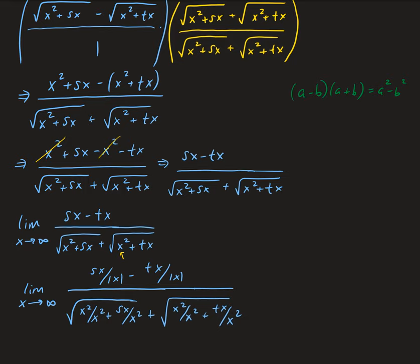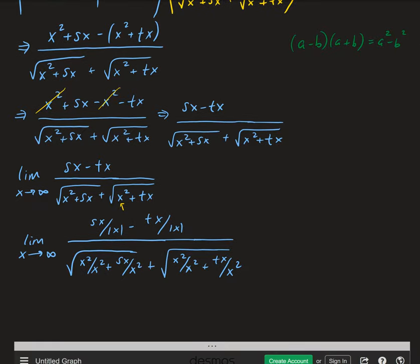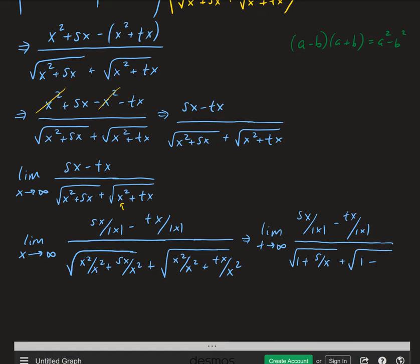As x is approaching infinity, we can simplify this a little more. This is going to be sx over the absolute value of x minus tx over the absolute value of x, all divided by the square root of 1 plus s over x, plus the square root of 1 plus t over x.